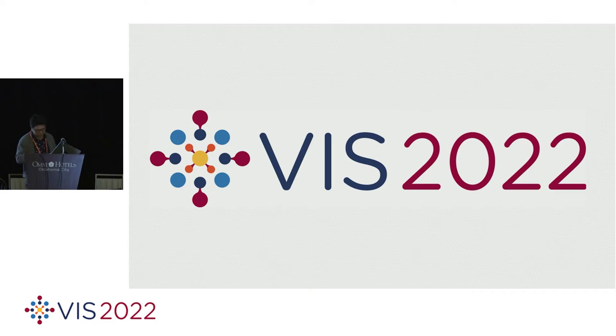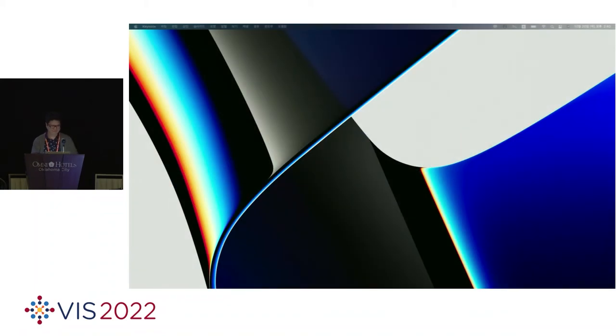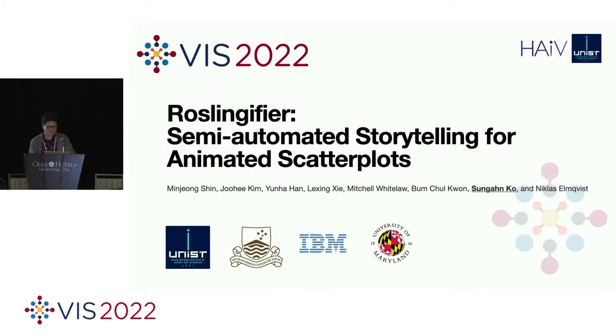The next paper is called, oh, let's see if I can say this, Roslingifier. Did I pronounce that correct? Roslingifier. Semi-Automated Storytelling for Animated Scatter Plots. I like the title, by the way. It's very good. Very creative. And the authors are Minjohn Shin et al. And we're looking forward to a good presentation.